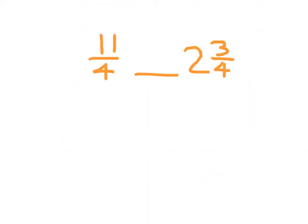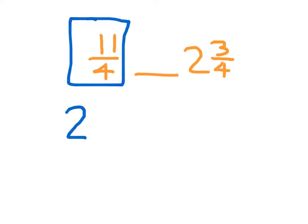Here's another problem. We have 11 fourths comparing it with 2 and 3 fourths. This time, instead of changing the mixed number to an improper fraction, I'll take the improper fraction and change it to a mixed number. 4 goes into 11 two whole times with a remainder of 3, so that's 3 fourths — giving us 2 and 3 fourths. Those two are equal.